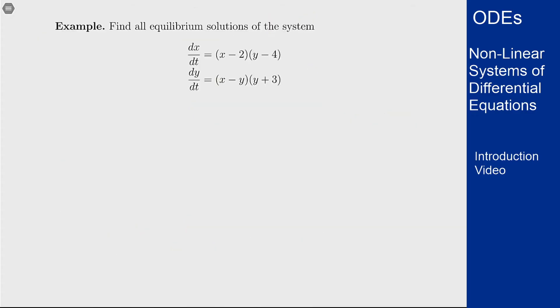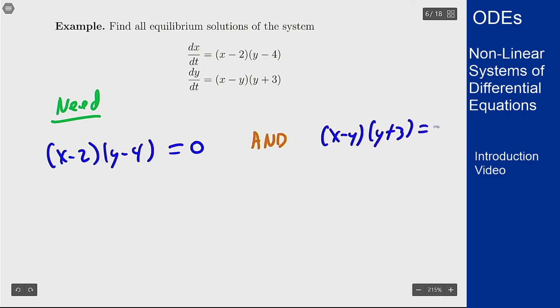Let's see an example of what this might look like. I want to find all the equilibrium solutions of the system here: dx/dt is (x - 2)(y - 4) and dy/dt is (x - y)(y + 3). So if we want to find these solutions we need both these to be zero at the same time. So I need (x - 2)(y - 4) to be zero and I need (x - y)(y + 3) to be zero.